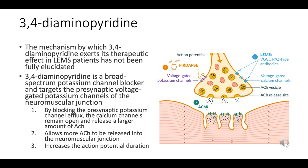3,4-diaminopyridine, or 3,4-DAP, is a therapeutic agent primarily utilized in the management of LEMS. It is a broad-spectrum potassium channel blocker that acts on the presynaptic voltage-gated potassium channels at the neuromuscular junction. By blocking potassium channels and inhibiting the efflux of potassium ions, 3,4-DAP prolongs depolarization, keeping calcium channels open longer, thus enhancing calcium influx.